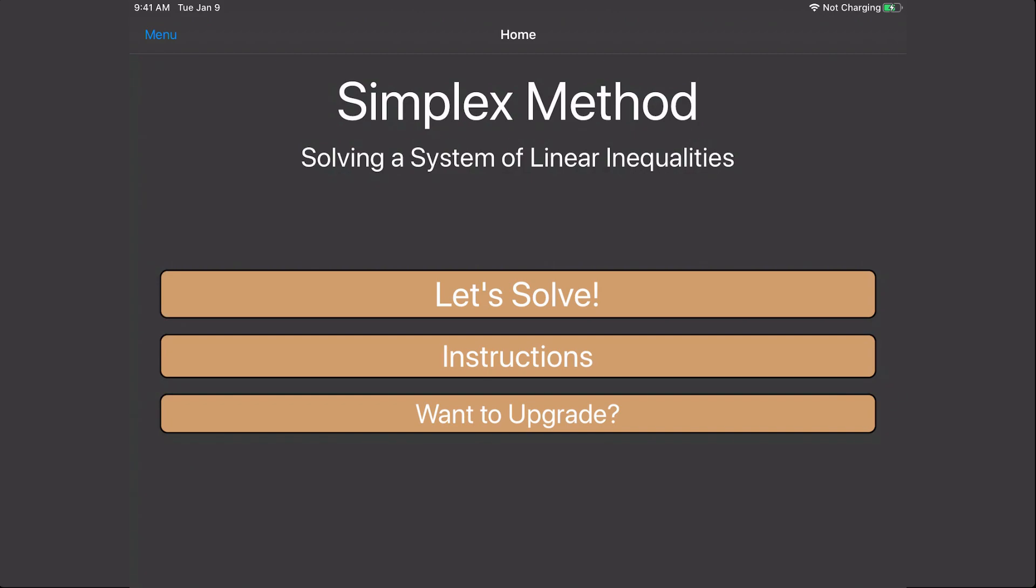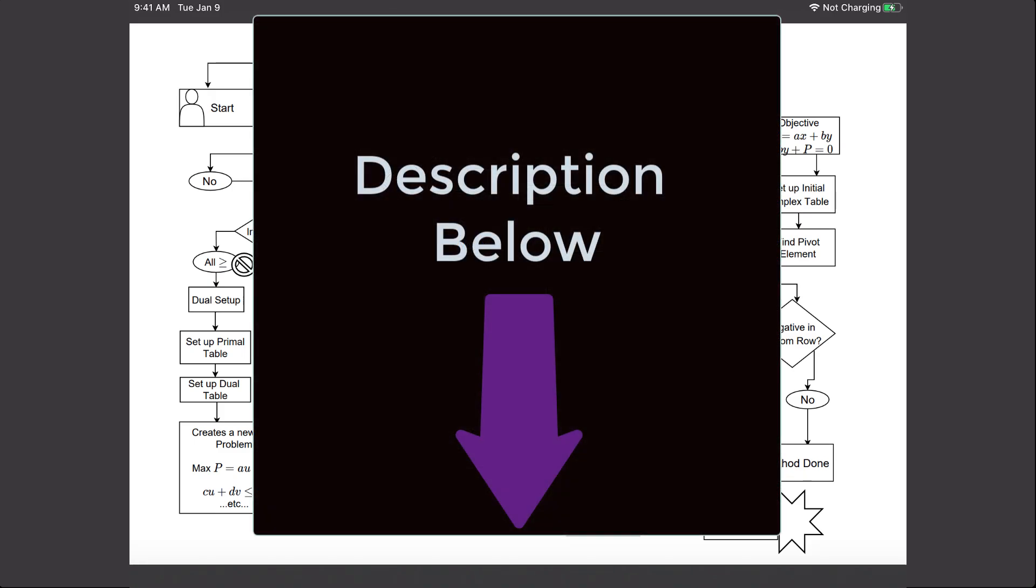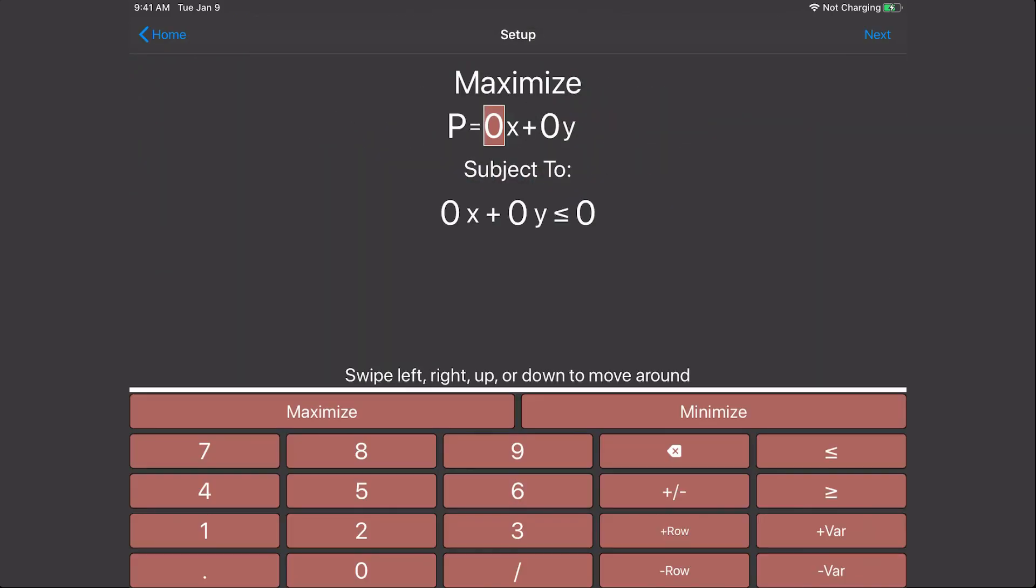I also have a simplex method flowchart. The links for both the app and the flowchart can be found in the description below. Anyhow, on with the problem. The problem we're going to do is the following: Maximize p equals 50x plus 54y, subject to the following inequalities: x plus 2y less than or equal to 8, 3x plus 2y less than or equal to 16, and then x and y being both greater than or equal to 0.